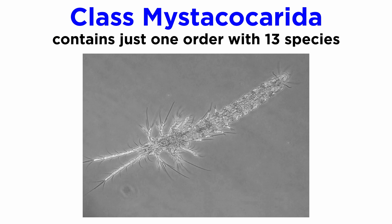Class Mystacocarida is monotypic, containing a single order. As of 2023, there are only 13 described species of mystacocarids, all of which are microscopic and live in the meiobenthos between grains of sand on marine beaches.